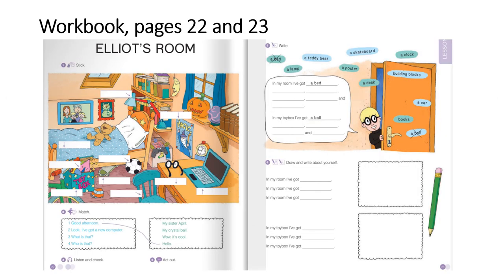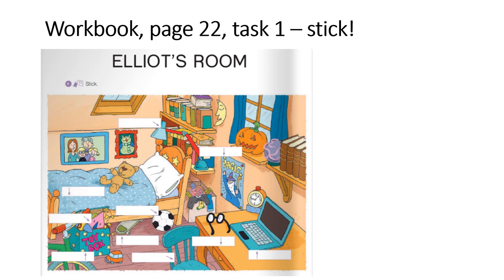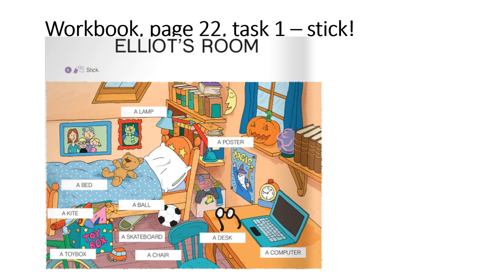Now, open your workbook pages 22 and 23, Elliot's room. Stop the video and do it. Exercise one — stick. Naljepnice ćeš pronaći na debelim stranicama na kraju radne bilježnice — poster, desk, chair — povadi ih i zalijepi. Stop the video. I ovako bi trebalo izgledati kada napraviš. Stop the video and check it out. Zaustavi video i provjeri.